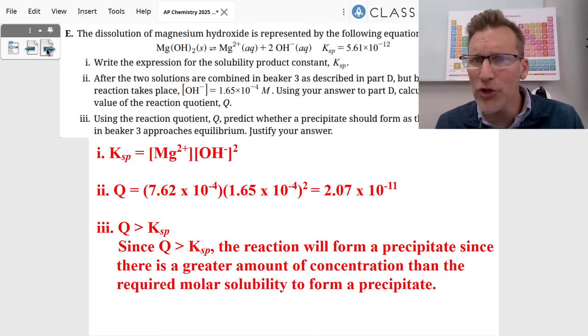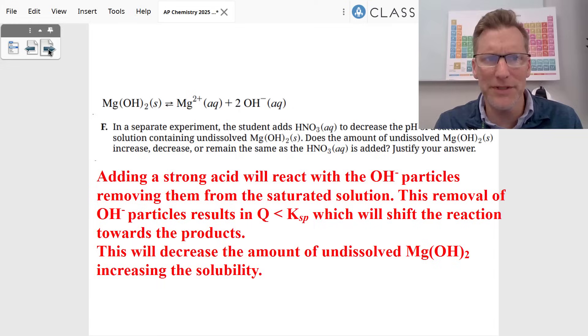Which is a larger value than your K. That value is larger than the K. The Q is greater than the K. And if the Q is greater than the K, the reaction will shift to the left, forming more precipitate since there's a greater amount of concentration than the required molar solubility to form a precipitate. We will get a precipitate.